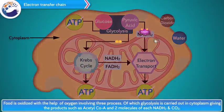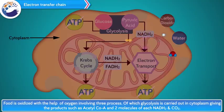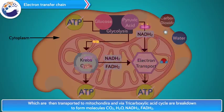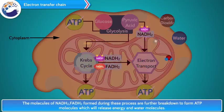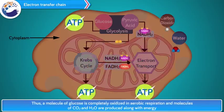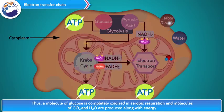To summarize aerobic respiration: food is oxidized with the help of oxygen involving three processes. Glycolysis is carried out in the cytoplasm, giving products such as acetyl CoA and two molecules each of NADH2 and CO2, which are then transported to the mitochondria. Via the tricarboxylic acid cycle, they are broken down to form CO2, H2O, NADH2, and FADH2. These molecules are further broken down to form ATP, releasing energy and water. Thus, a molecule of glucose is completely oxidized and CO2 and H2O are produced along with energy.